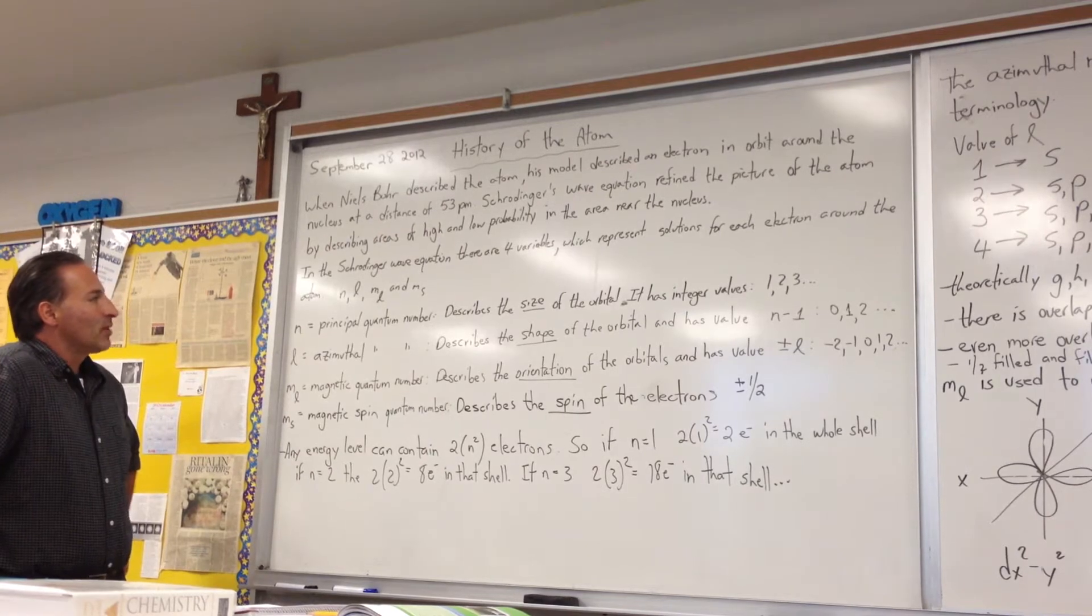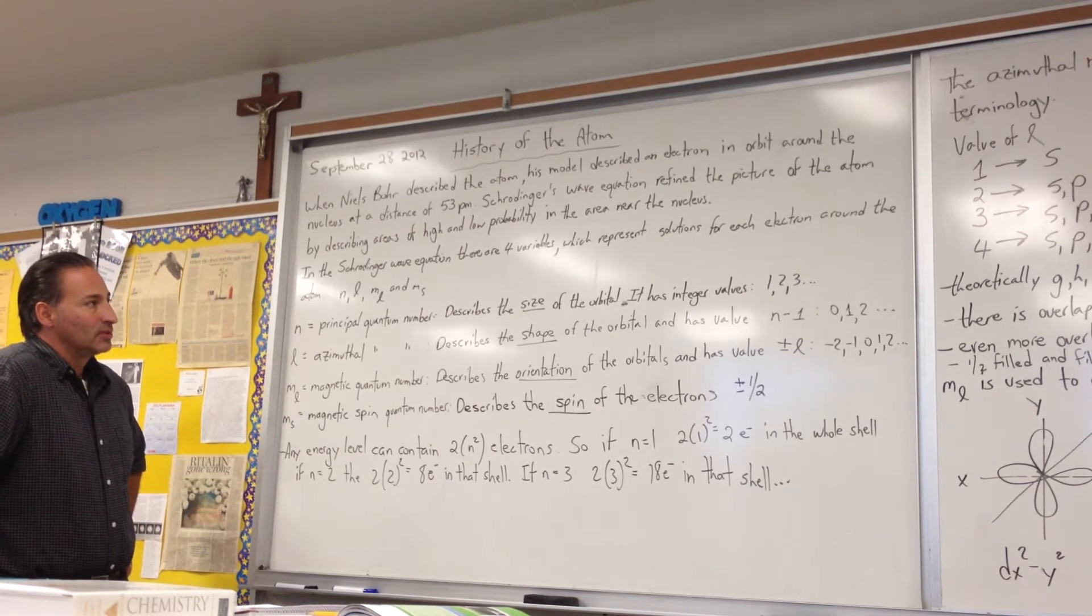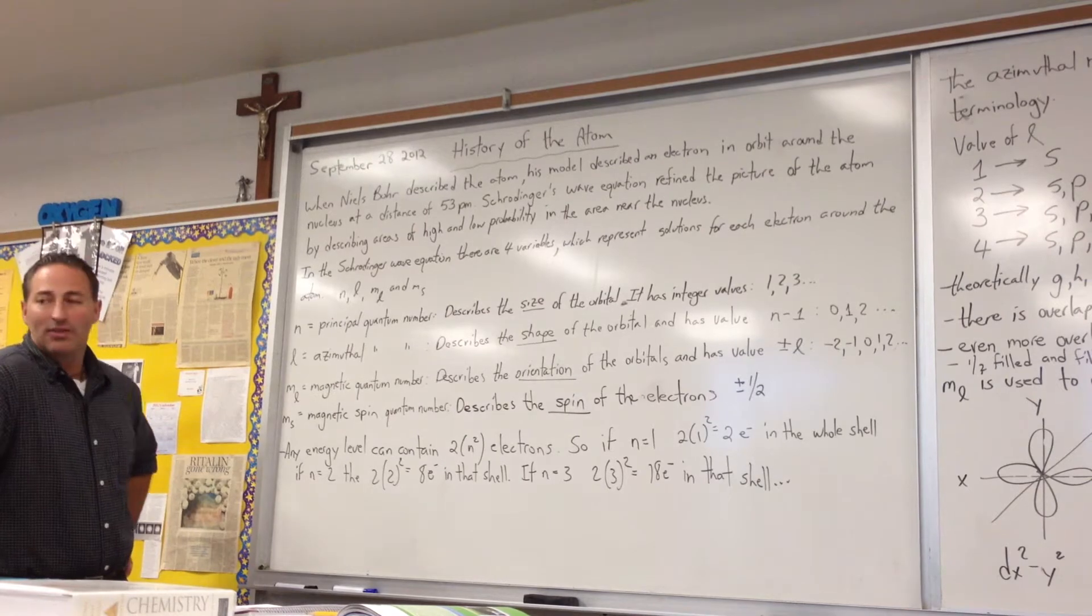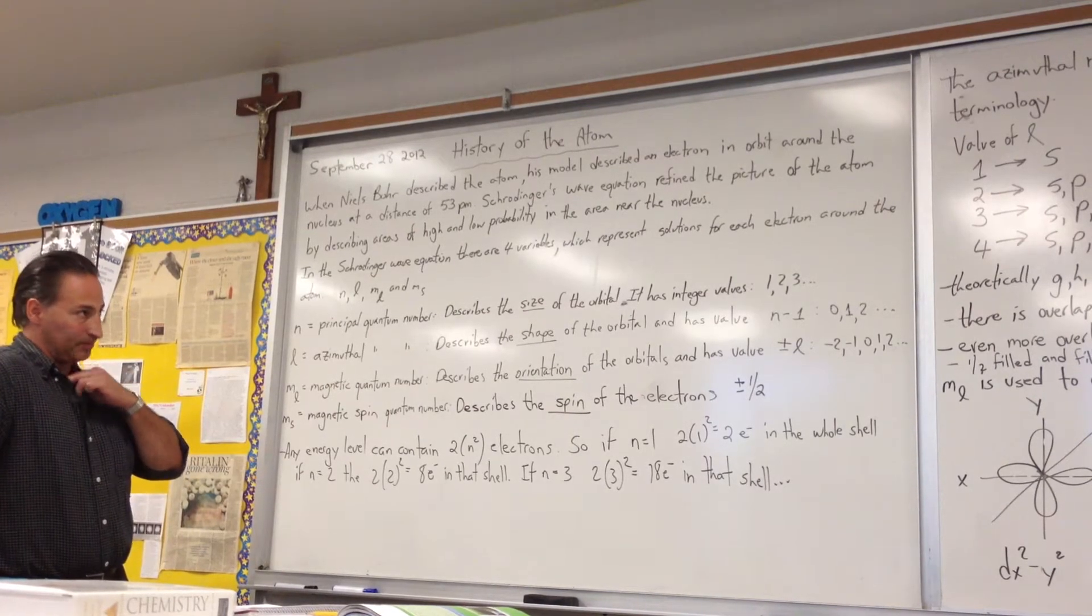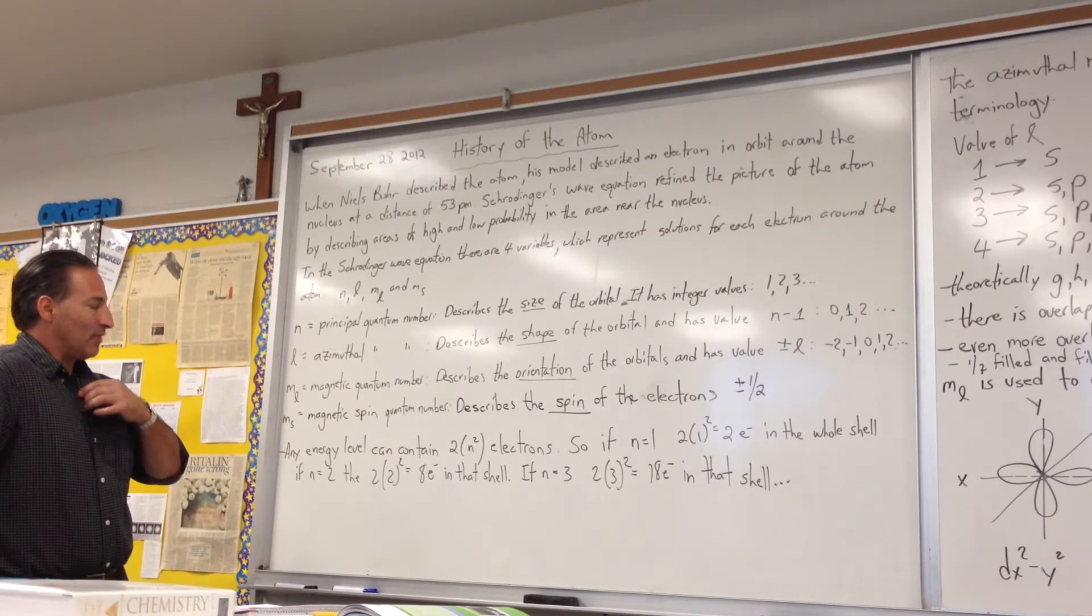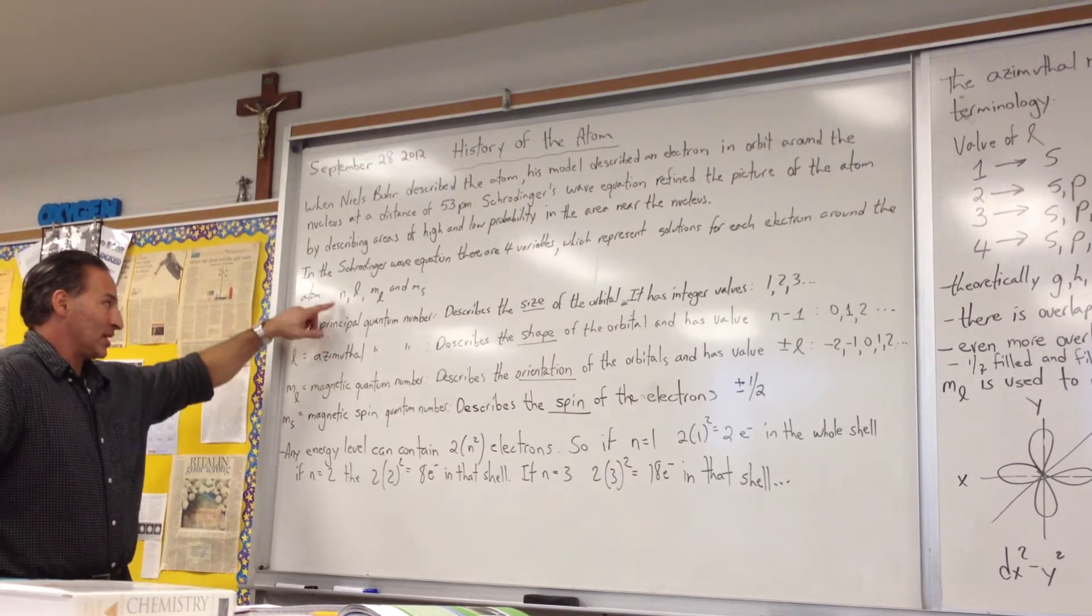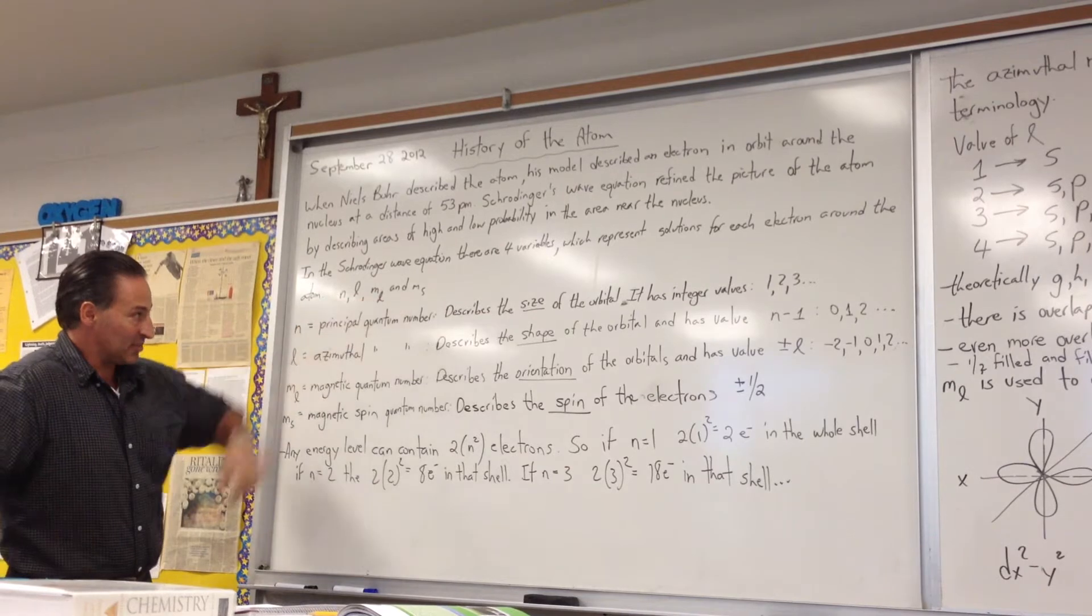In Schrödinger's wave equation, there are four variables, each of which represent a different aspect of the electron's motion or the shape of the motion. These four variables are represented by four letters: N, L, M sub L, and M sub S.